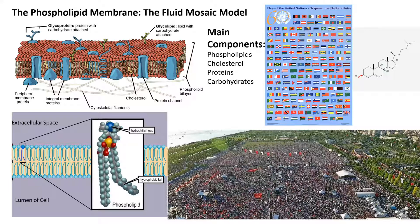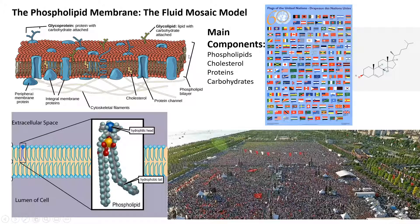As you can see, it consists of many different parts. A few of the main ones we will be covering are labeled here: phospholipids, cholesterol, proteins, and carbohydrates. It's mostly made of phospholipids, but it also contains these other important components.